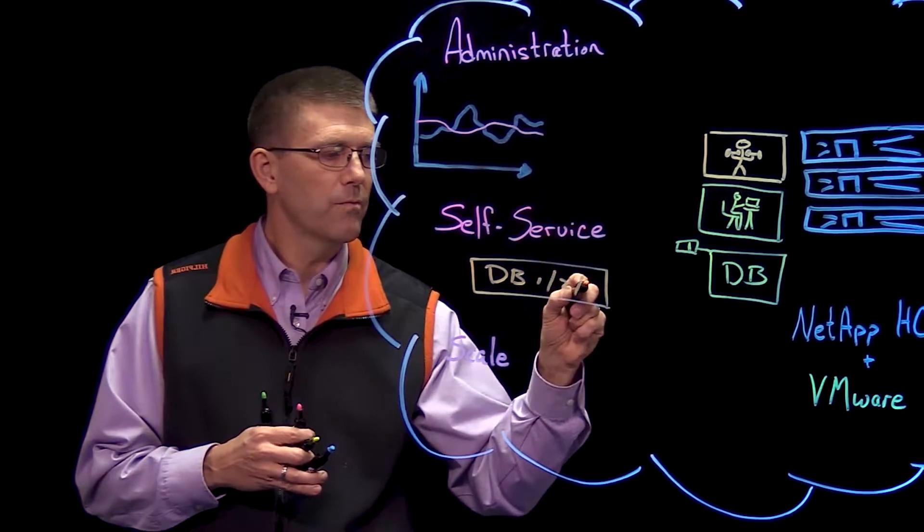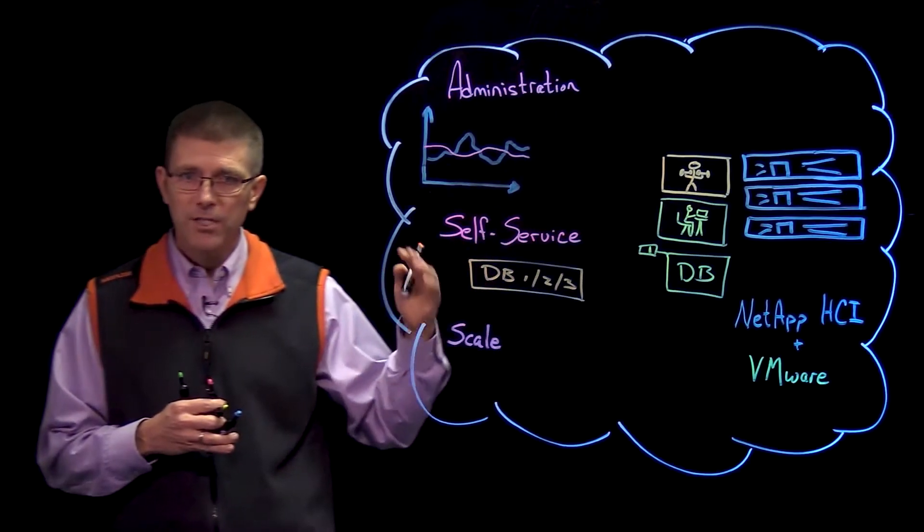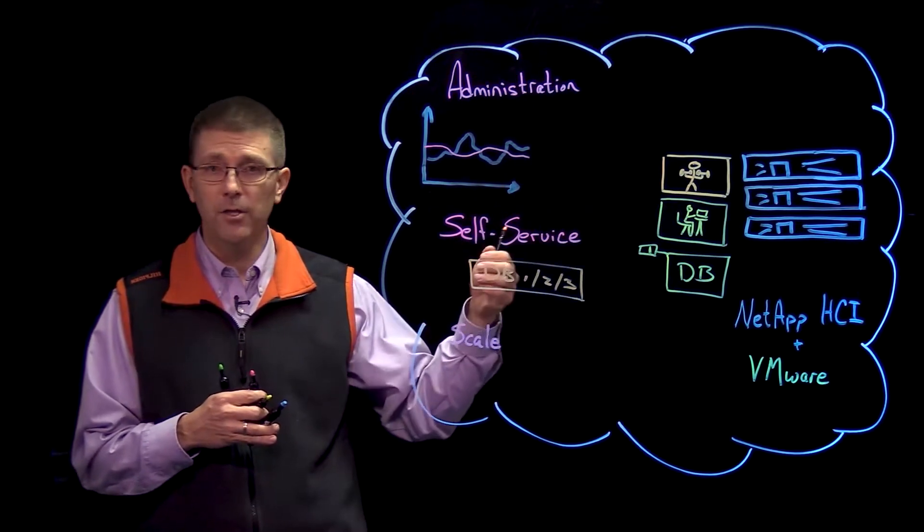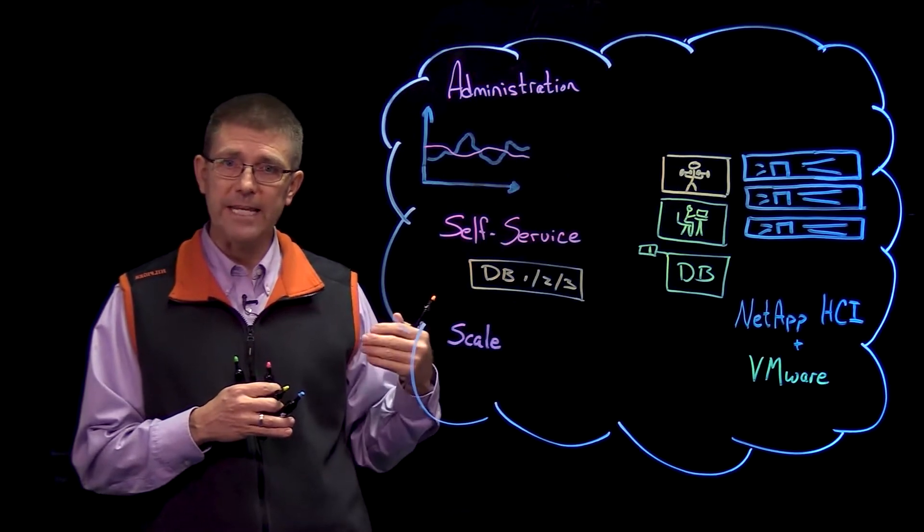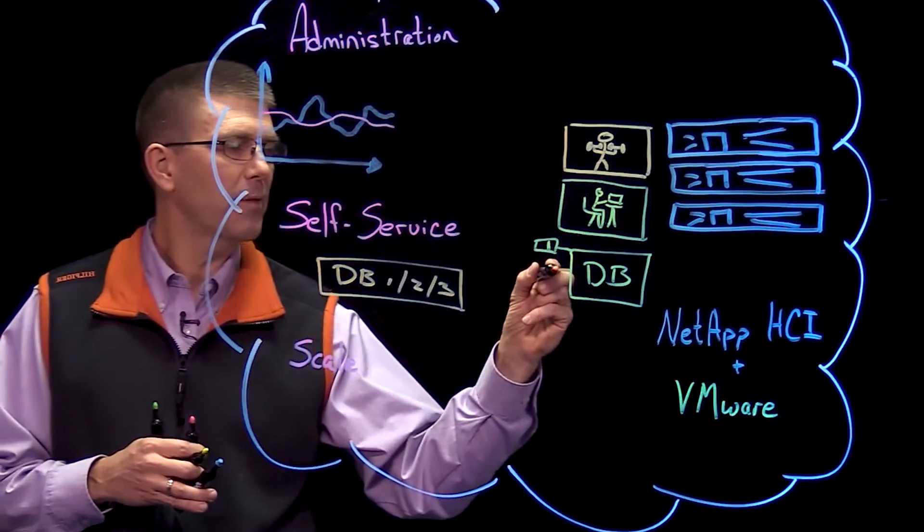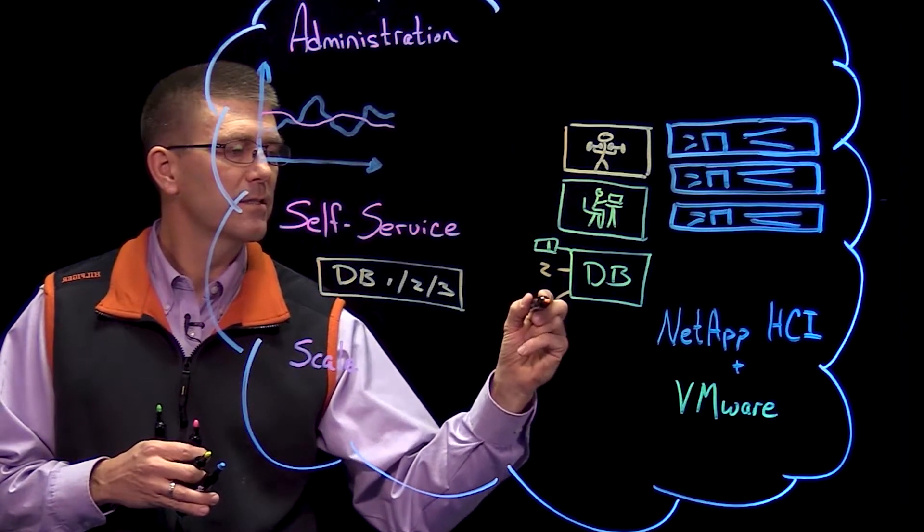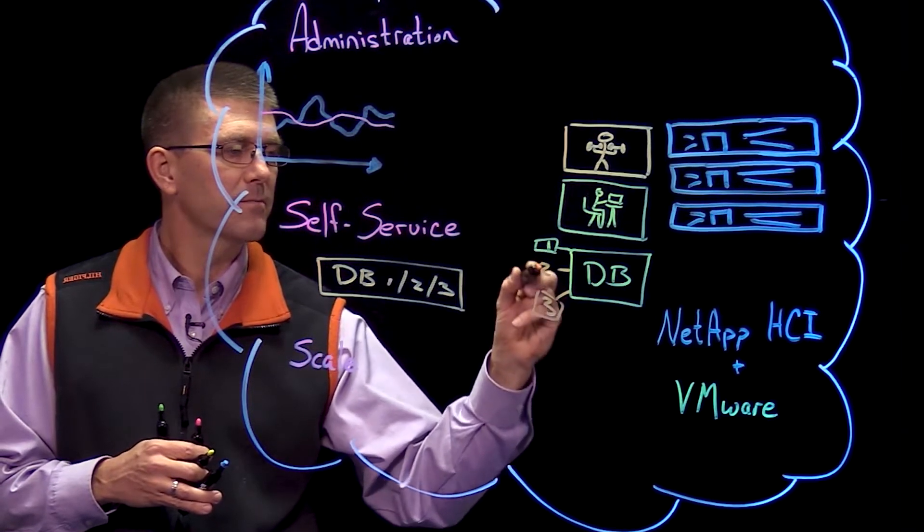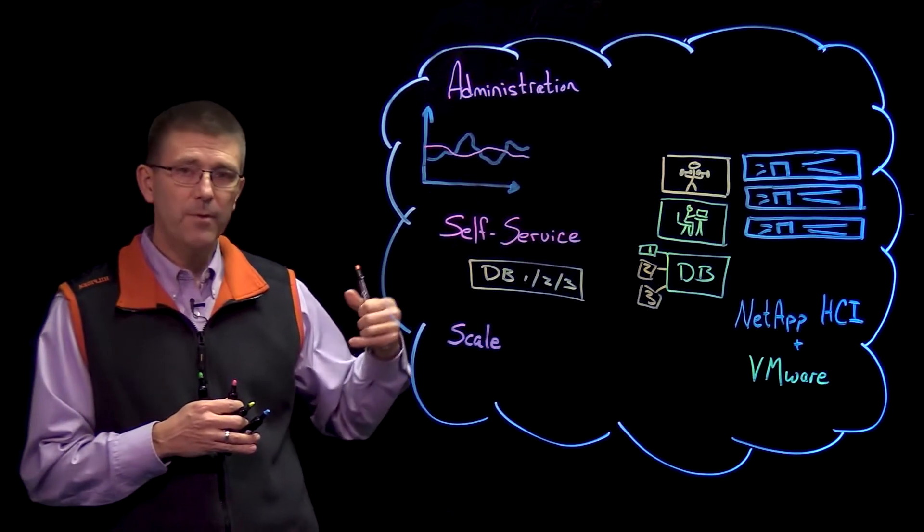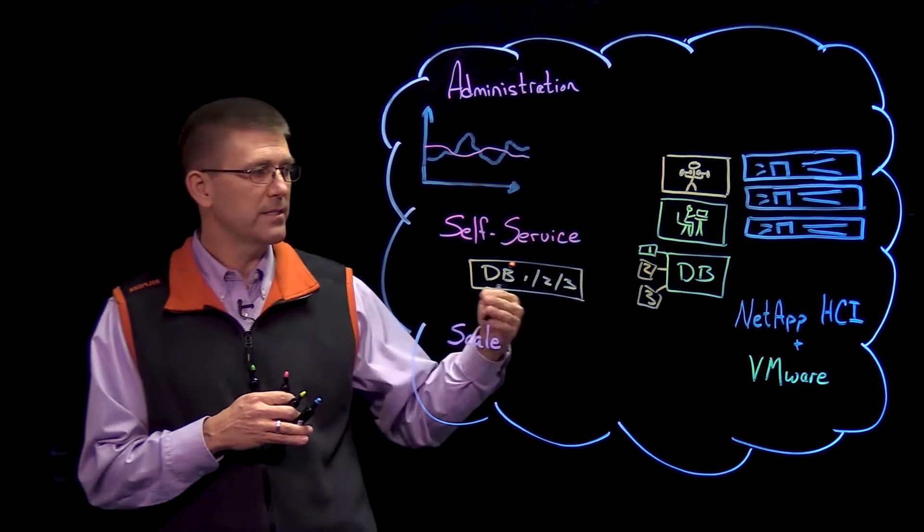I've got one, two, three databases. This is a self-service portal where the users can go and automatically create services and things they need to do their jobs more efficiently. As we do that, let's go ahead and add a couple of additional instances to this database. These are done through the self-service portal, so I don't have to keep going back to the IT group to get these done.